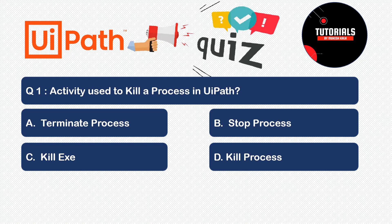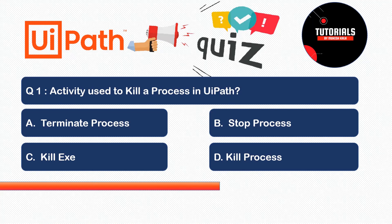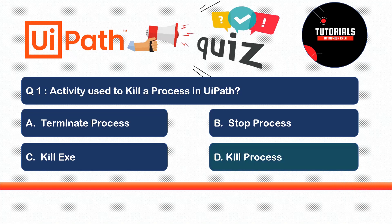Question 1: What is the activity used to kill a process in UiPath? Before starting any automation, we want the environment to be clean and kill certain executables. The options are: A) Terminate Process, B) Stop Process, C) Kill Exe, or D) Kill Process. The correct answer is Kill Process.